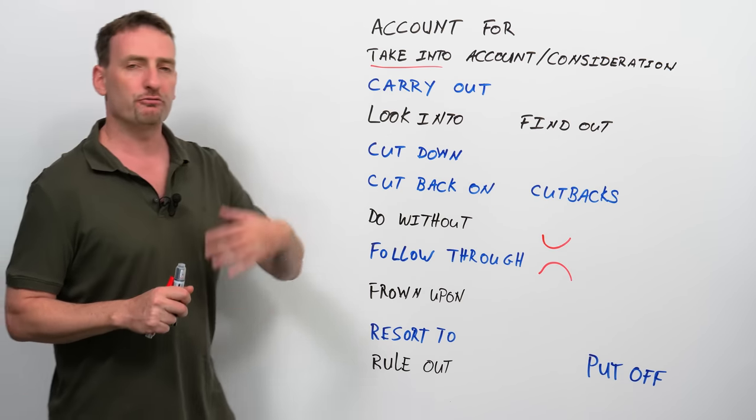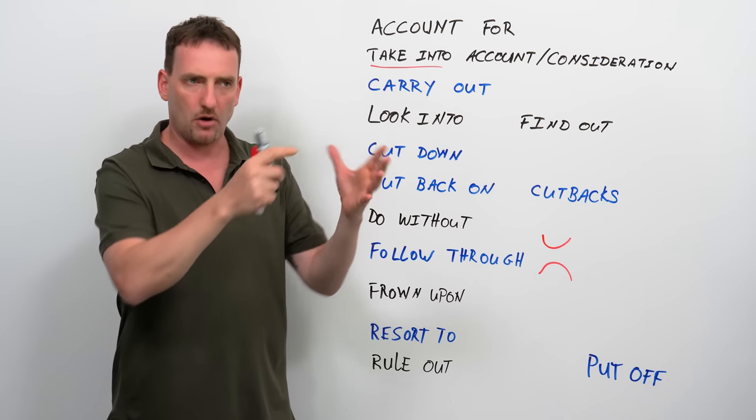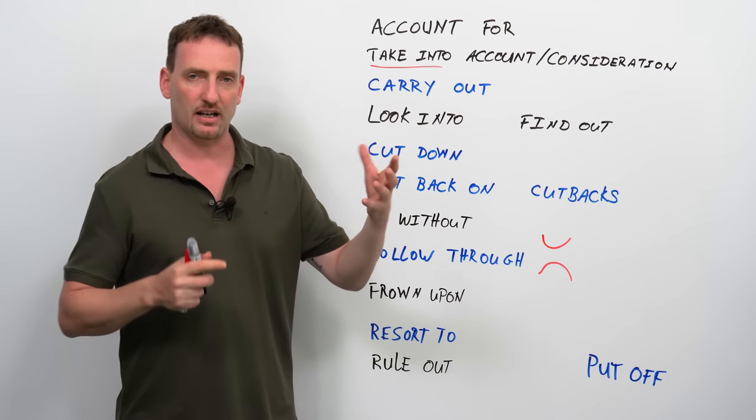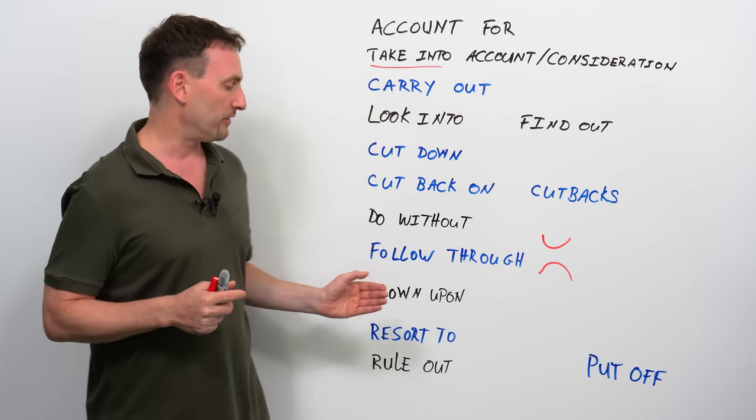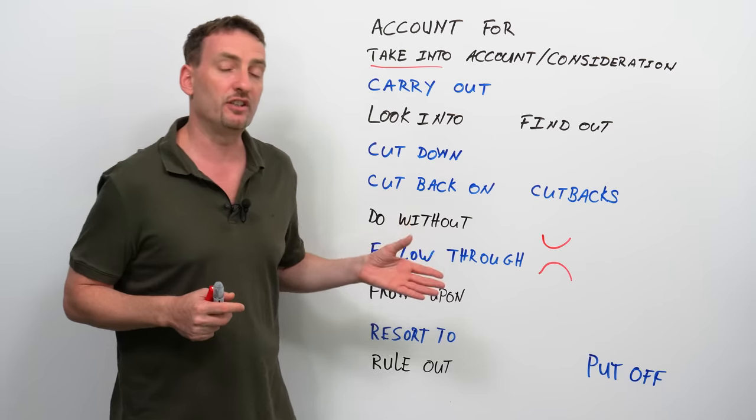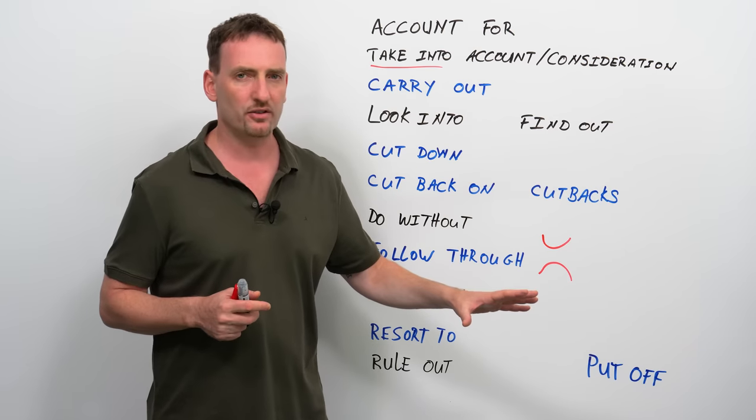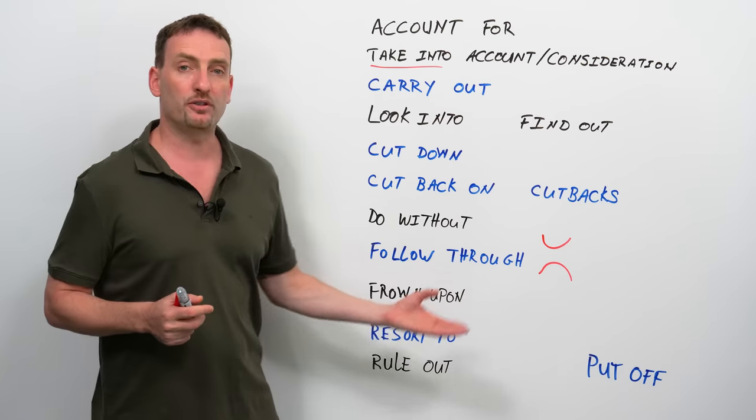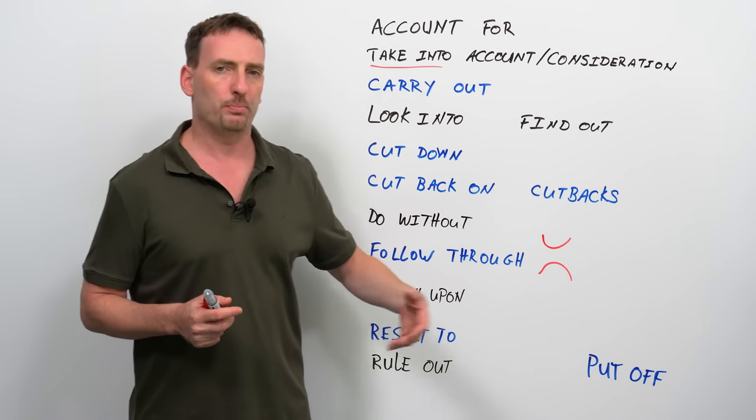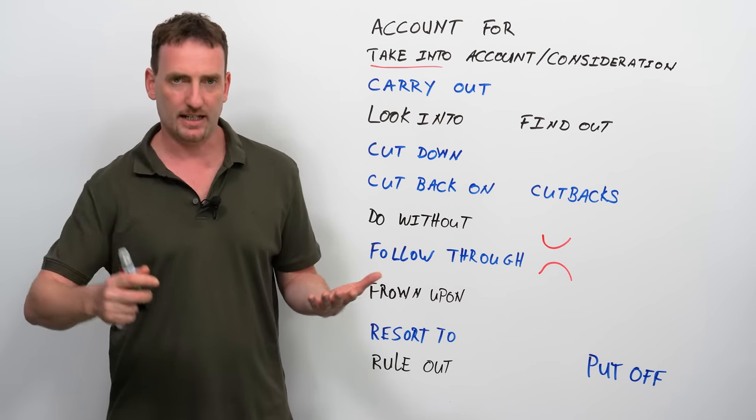Resort to. When you resort to something, you're using this option or this tactic or this thing that you can do as the last option. So, for example, if you want to... If you need to resort to something, it's usually something that you don't want to do, but you have no more options. So people resort to legal action or people resort to violence when they have nothing... There's nothing else they can do.